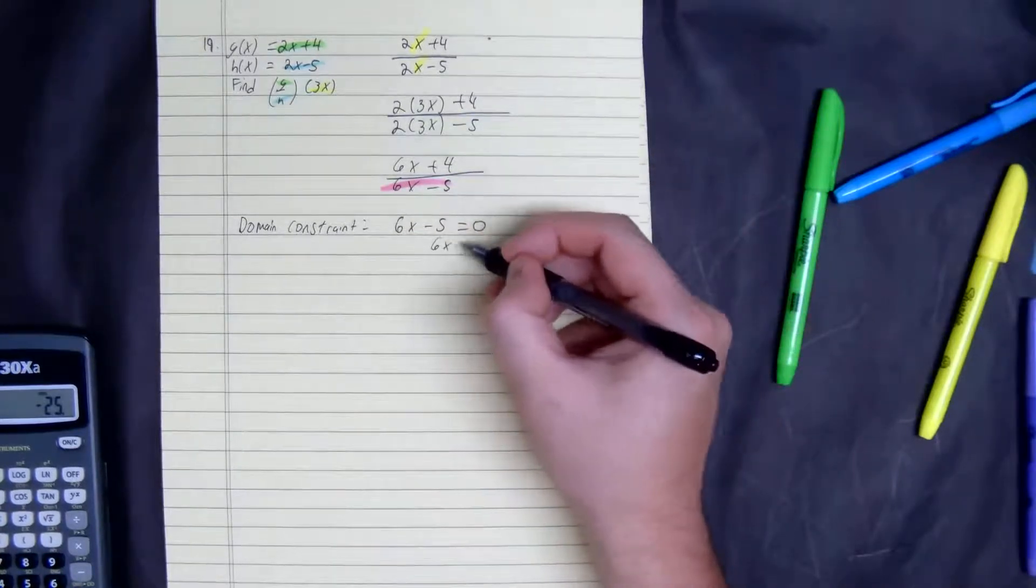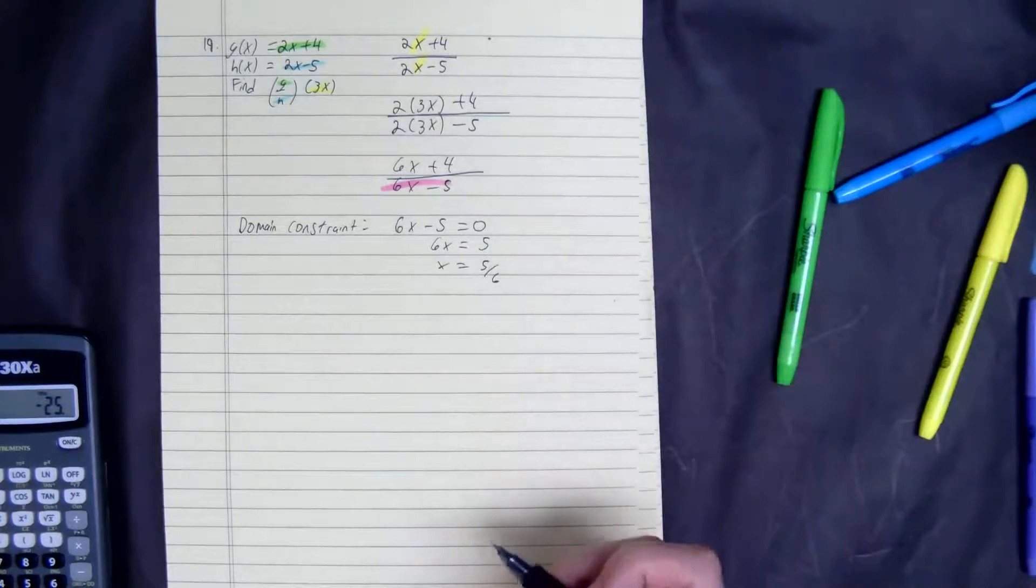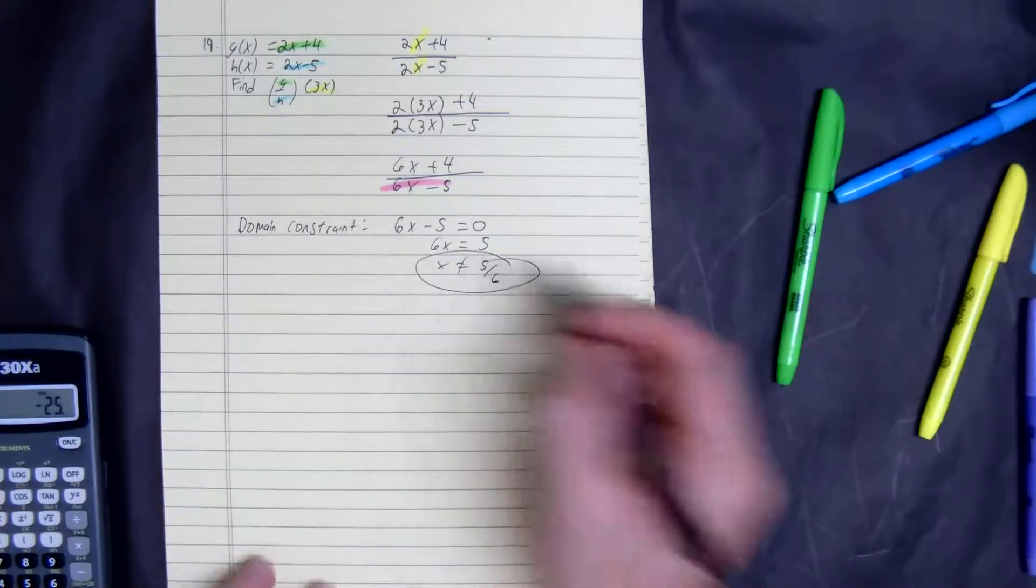Add 5, you get 6x equals 5. Divide by 6, x equals 5/6. So x cannot equal 5/6 for the domain constraint.